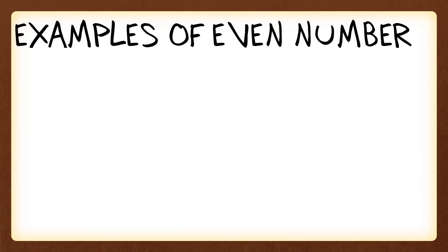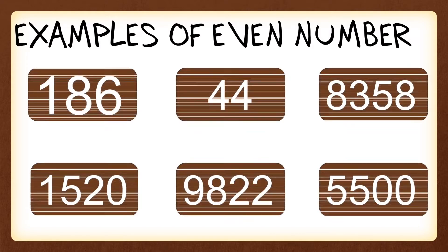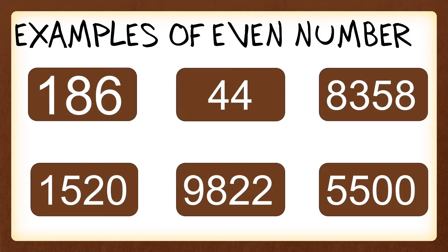Here are some examples of an even number: one hundred eighty-six, forty-four, eight thousand three hundred fifty-eight, one thousand five hundred twenty, nine thousand eight hundred twenty-two, and five thousand five hundred. Based on our definition, an even number has a last digit of zero, two, four, six, or eight. So in these examples we're going to look at the last digit to determine that the number is an even number.